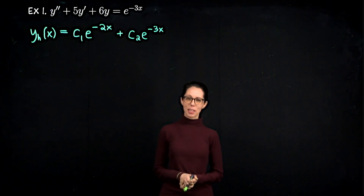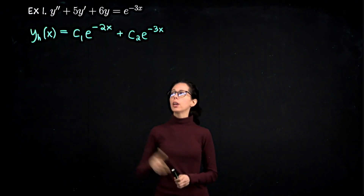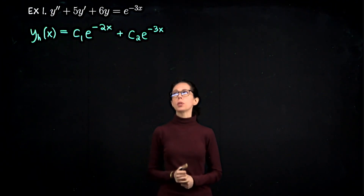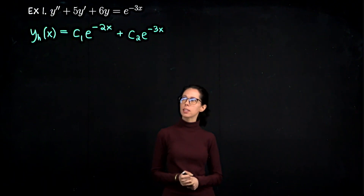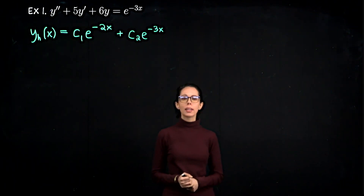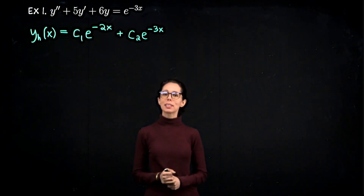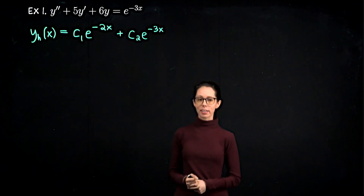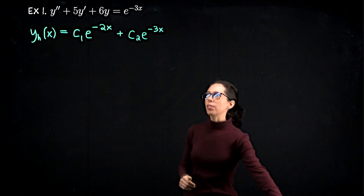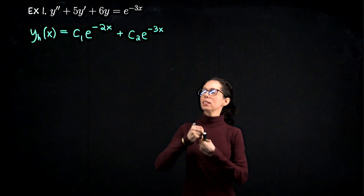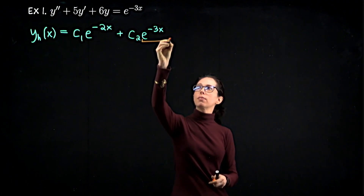For this first example, if you write down the characteristic equation and find the roots, you arrive at this homogeneous solution: y_h(x) equals c1·e^(−2x) plus c2·e^(−3x). The e^(−3x) looks like our forcing function.